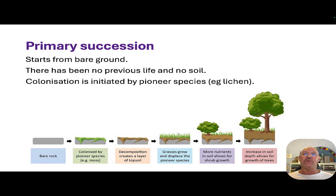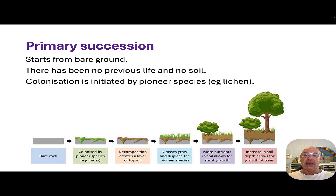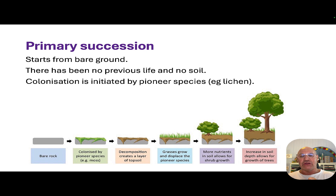Primary succession is where we start with bare rock — there's never been life on that particular land, and there's no soil. So it's starting from bare rock, no soil, no previous life. The first step is colonisation, and that's when you have a pioneer species. A great example is moss or lichen that can adhere to the rock and actually release an acid that helps break down that rock to start forming a little bit of soil.